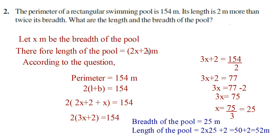And the length of the pool is 2x plus 2, that is 2 into 25 plus 2, which is 50 plus 2, equal to 52 meters.